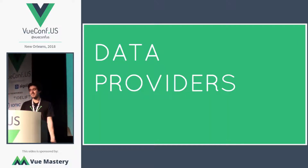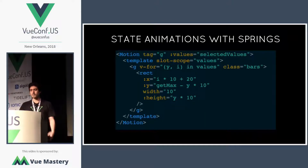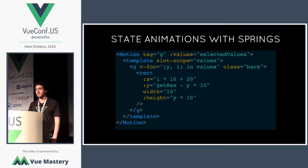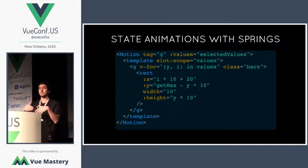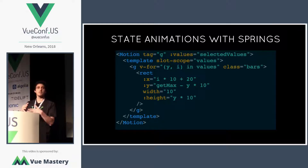The first part I want to show you is data providers. Data providers is a kind of abstraction — a component that allows you to abstract some logic, retrieve information, keep that logic hidden in that component. For example, you can create state animations with springs. This is a real component: ScopeMotion, from a library called ViewMotion. You provide the values — selected values — and in a scoped slot you retrieve the interpolated values that make the animation go.